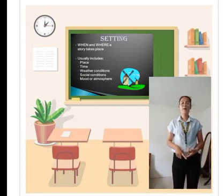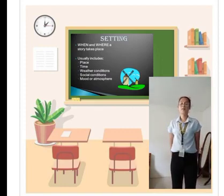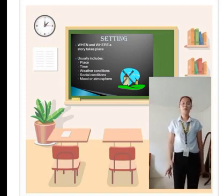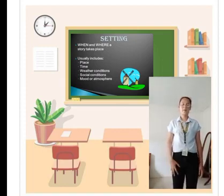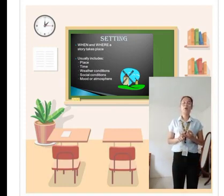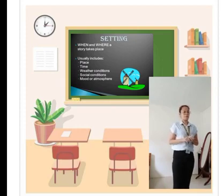First element in the short story is setting. Setting is when and where story takes place. Usually includes place, time, weather conditions, mood, and atmosphere.